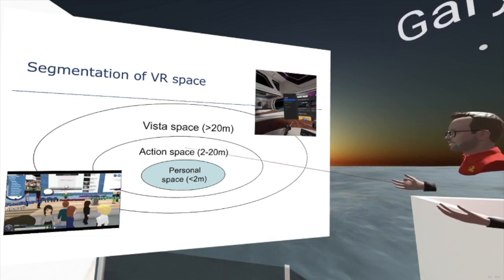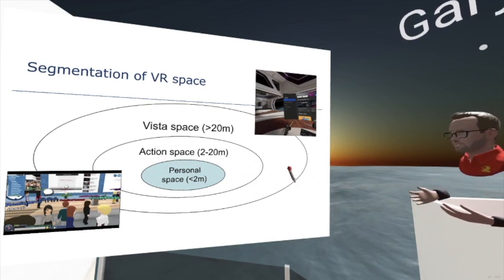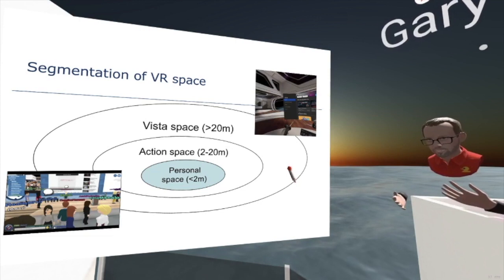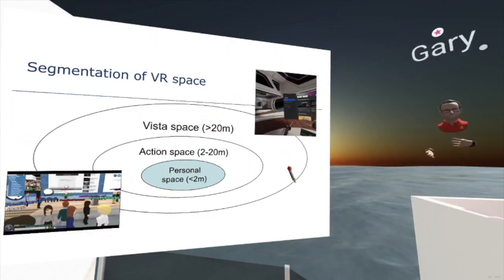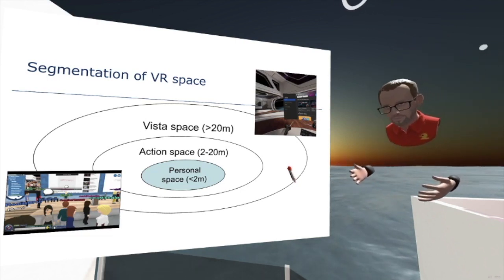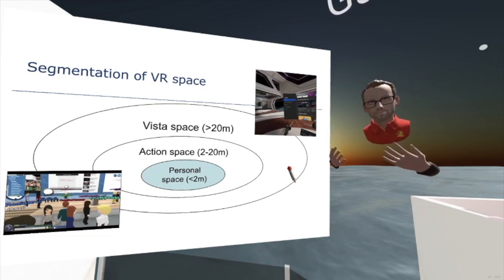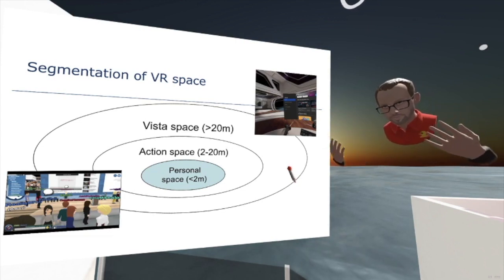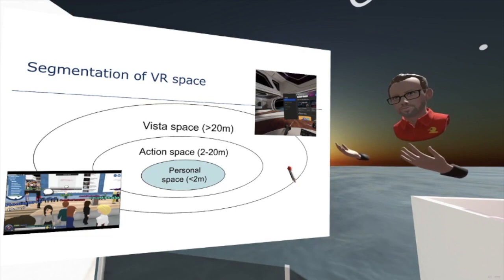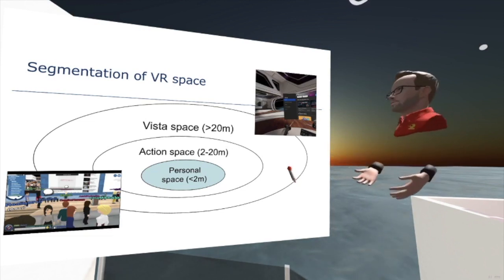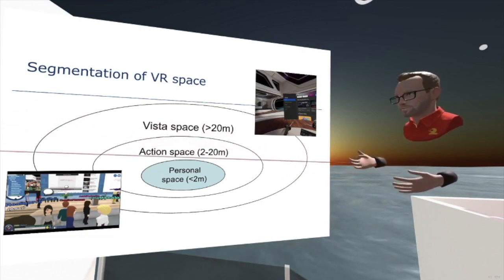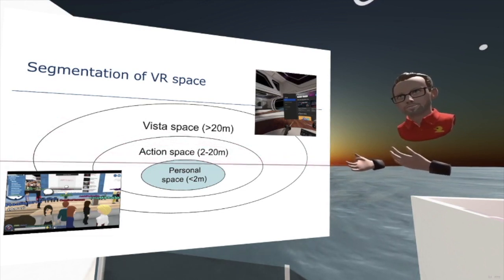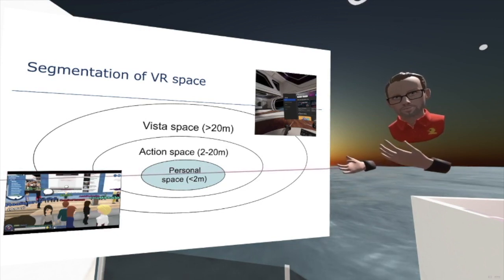Action space — roughly a two to twenty metre type zone — is where we can influence the world through actions. I can make quick movements to go to particular places; I don't need to teleport long distances. I could interact with that space by throwing something, or pointing at things at a distance with a laser. It's essentially still public space, but space that I can still interact with in various ways.